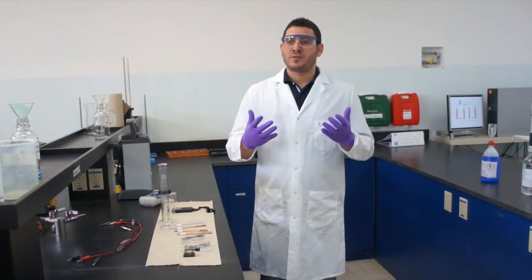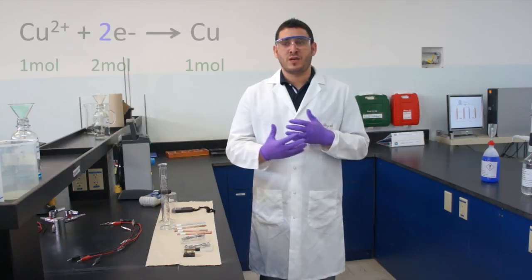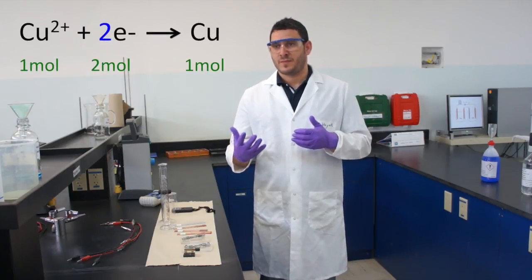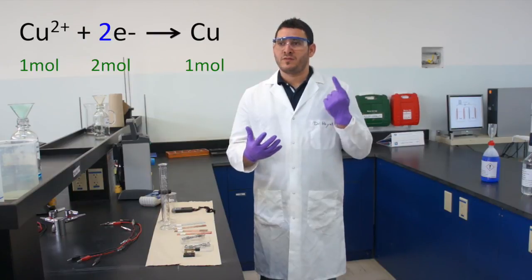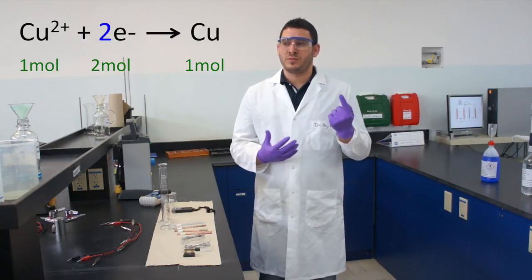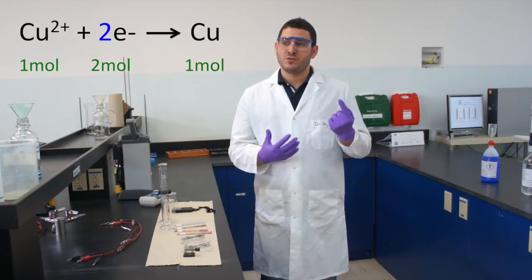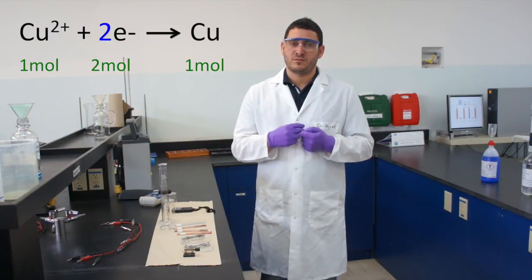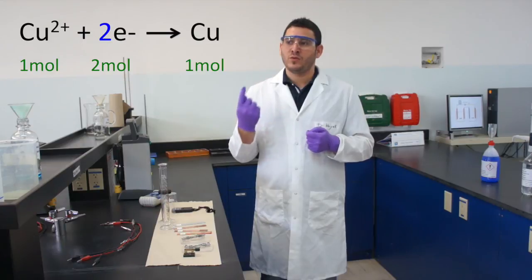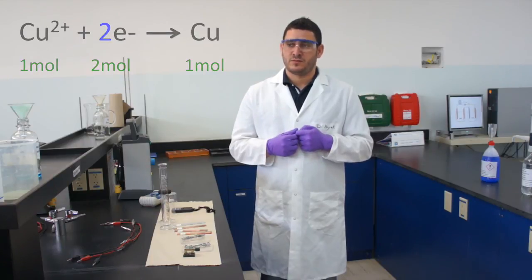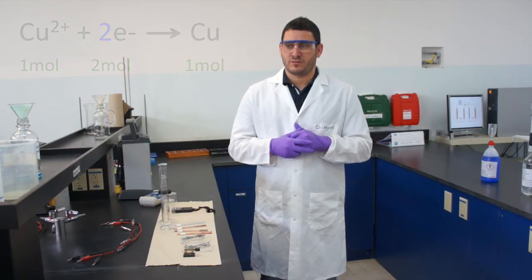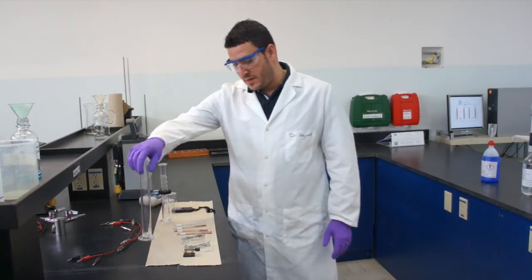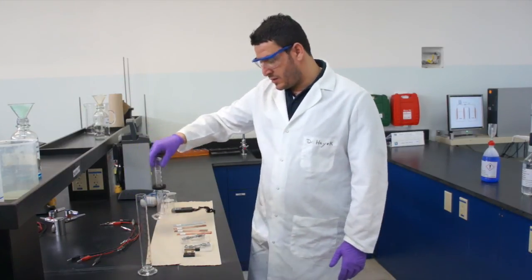For example, Cu²⁺ + 2e⁻ gives you Cu solid. This means every one mole of Cu²⁺ consumes, or needs, two moles of electrons to deposit one mole of copper solid on the cathode. You will see the calculation of how we are going to do this.